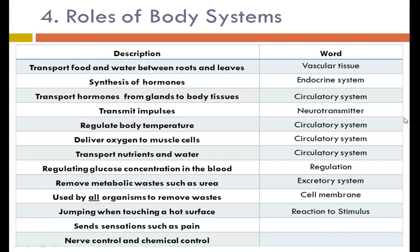Jumping when touching a hot surface is a reaction to a stimulus. The stimulus is the hot surface; that message is sent between neurotransmitters to your motor neurons, causing you to jump back. The nervous system sends sensations such as pain — for example, at the dentist they give you Novocaine, which numbs the area and prevents the nervous system from sending those messages. Nerve control and chemical control are both forms of regulation.